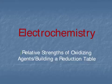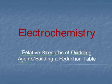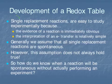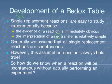In this video, we will take a look at the relative strength of oxidizing agents and then use that knowledge to build a reduction table. First, let's take a look at how a reduction table is determined. We're going to study single replacement reactions because they are simple to study. We can easily determine whether or not a reaction has occurred, and we can also determine if an electron transfer has occurred, because if a reaction does occur, we know one species is being reduced and the other is being oxidized.